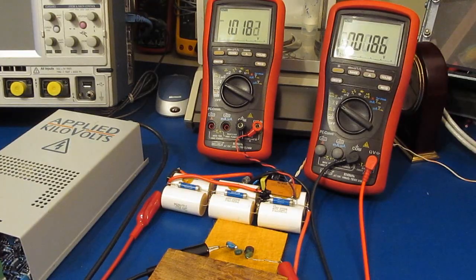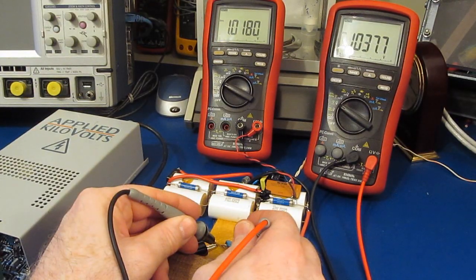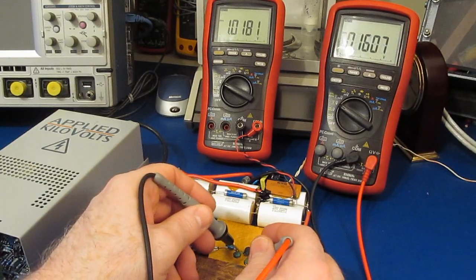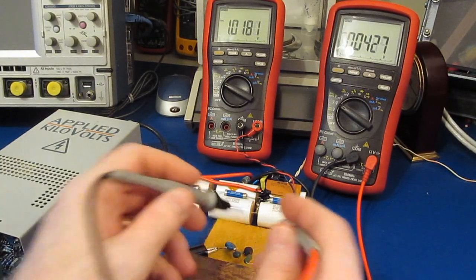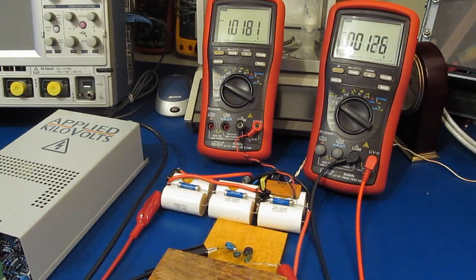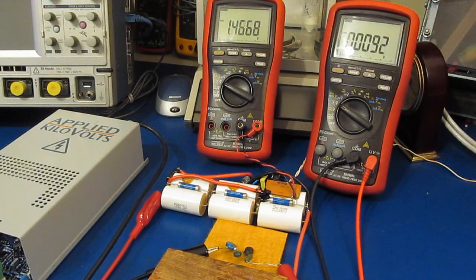So here we are at a thousand volts. Let's see if we look across the MOV we have basically a thousand volts, and across the resistor and PTC basically 40 volts. That's because the MOVs will start to break down at 1.7 kV. Let's go ahead and turn up the power supply a little higher.